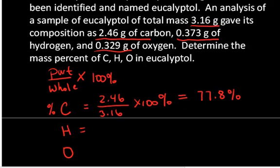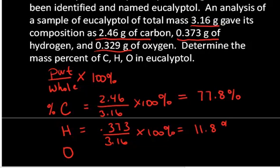Hydrogen is 0.373 grams divided by 3.16 grams times 100%, which equals 11.8% hydrogen.